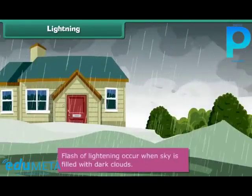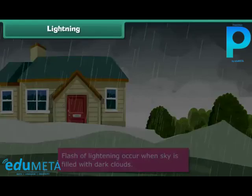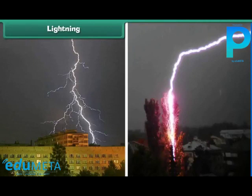Lightning. Lightning is also a natural disaster. During the rainy season, when the sky is filled with dark clouds, we see a flash of lightning. The lightning may strike buildings, trees, or a field. When lightning strikes, the existing things at that place burn. Sometimes animals and even people die due to lightning.